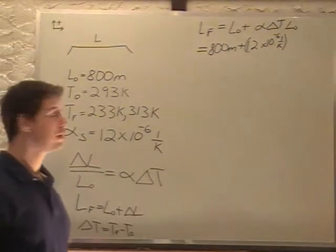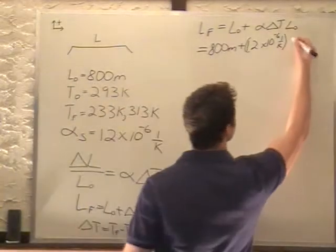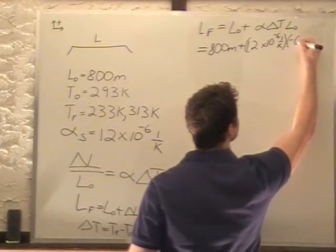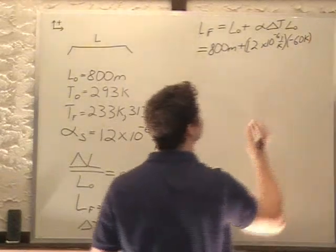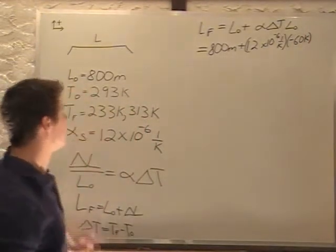And that's a 60 Kelvin difference. So this delta T, in this case, will turn out to be minus 60 Kelvin. Now, L0, the original length, is 800 meters.